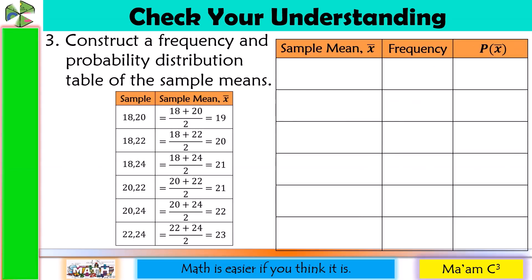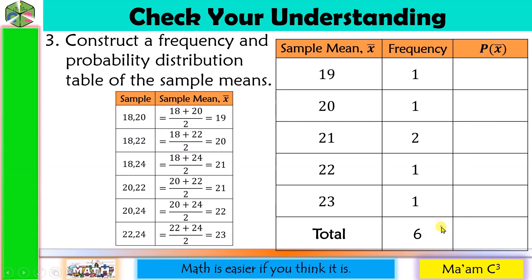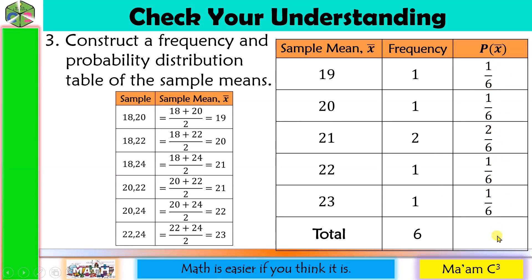Construct a frequency and probability distribution table. Arranging sample means in ascending order: 19, 20, 21, 22, and 23. For frequency: 19 occurs once, 20 once, 21 twice, 22 once, and 23 once. Total: 1+1+2+1+1=6. For the probability, divide each frequency by 6: 19→1/6; 20→1/6; 21→2/6; 22→1/6; 23→1/6. Summing: 1+1+2+1+1=6, so 6/6=1. Our probability distribution is correct.